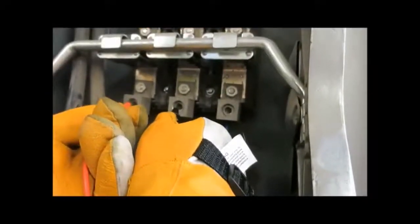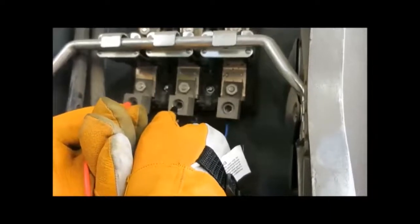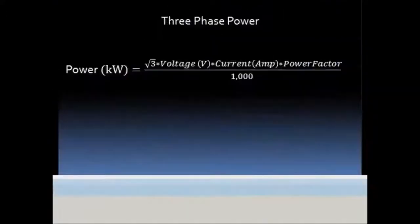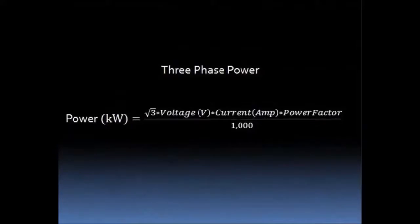Take the average of all amperage readings and all voltage readings to get your final measurement. To determine power in kilowatts, multiply the square root of three, voltage in volts, current in amps, and power factor. Then divide by a thousand to convert.